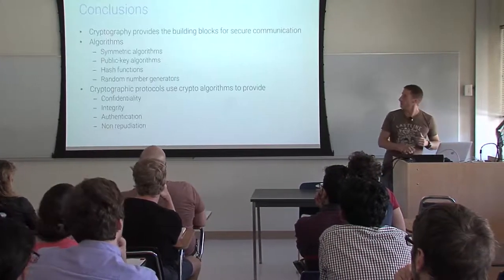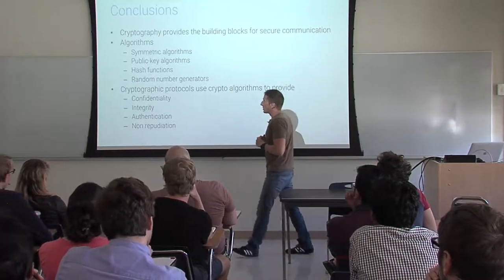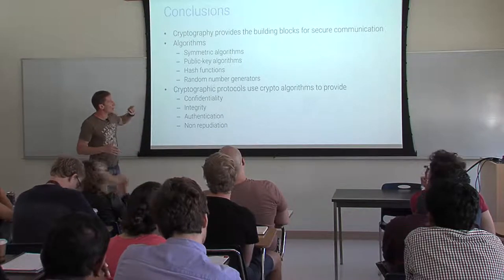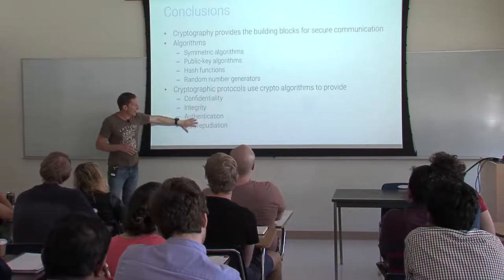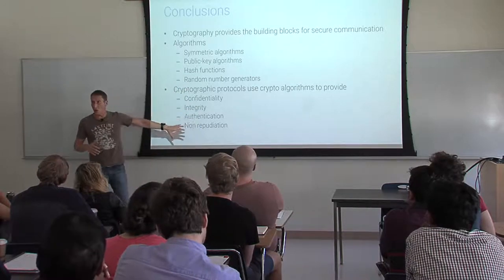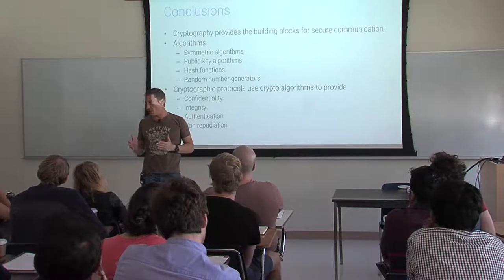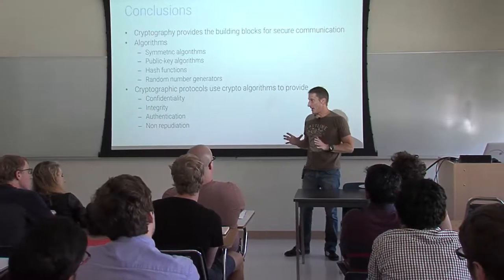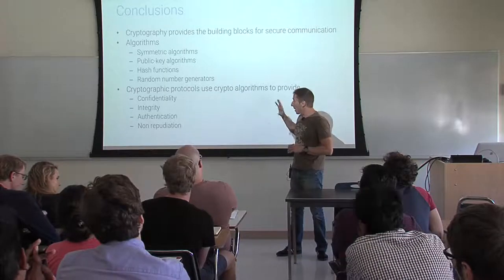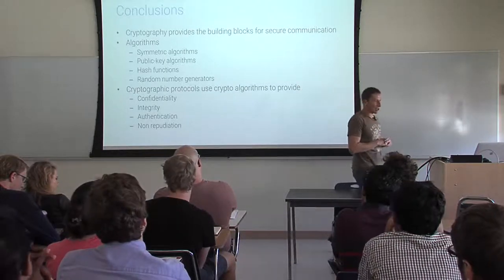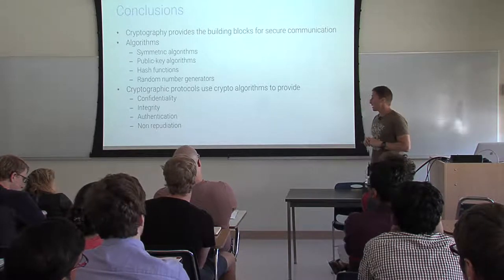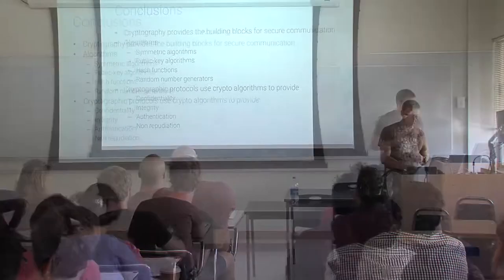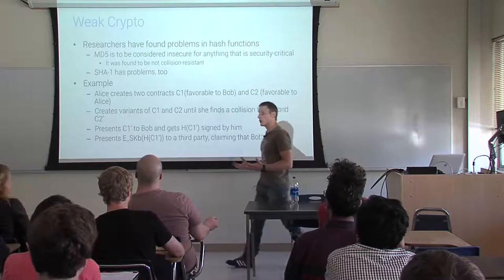In conclusion, crypto provides the building blocks to do secure communications. We have different types of algorithms: symmetric, public key, hash functions, random number generation. We have different compositions of building blocks to achieve different aspects of security and communication. This is fundamentally what I absolutely want you to understand about crypto. After a break, we will see some applications or problems with crypto to conclude our introduction.